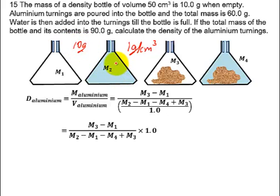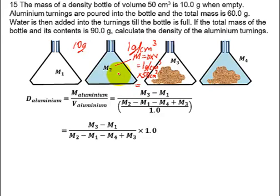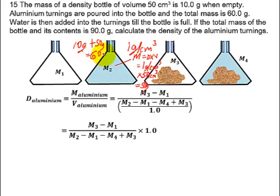All we need to do is find the mass of the water inside. We know that mass is density times volume. The density of water is 1 gram per centimeters cubed and its volume is 50 centimeters cubed — I know this because the volume of the density bottle is 50 centimeters cubed, so if a liquid completely fills the density bottle, its volume is also 50 centimeters cubed. The mass of water is therefore 50 grams. So to get M2, the mass of the density bottle and the water, we add 50 grams to get 60 grams.